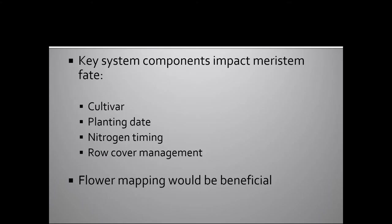There are a number of system components that impact the fate of your meristem on plants, but probably some of the more key components include cultivar, planting date, nitrogen fertilization, and row cover management. With all four of these, flower mapping would be very beneficial for helping you make reasonable and hopefully better management decisions.